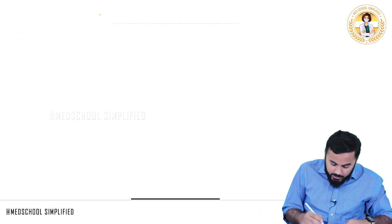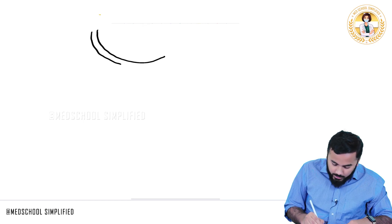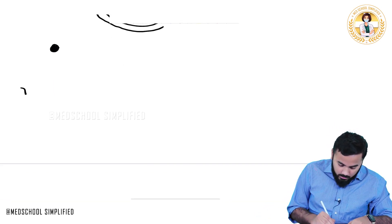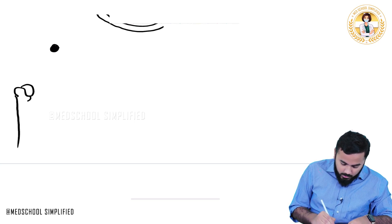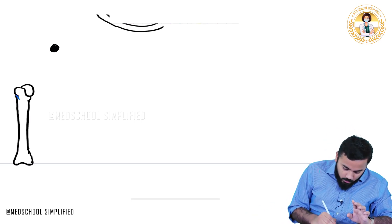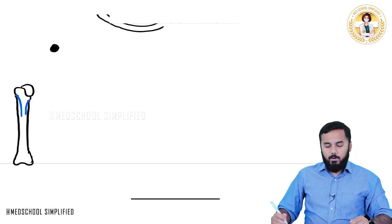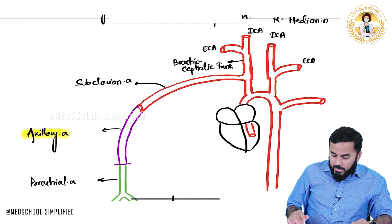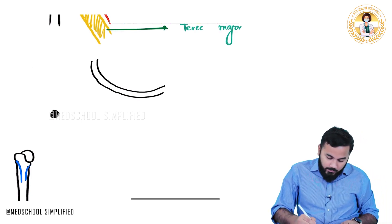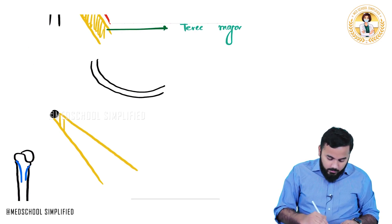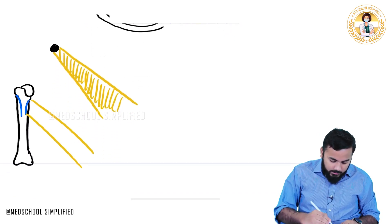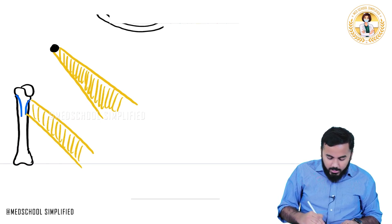I'm drawing the first rib over here, here we have the coracoid process, and here we have the humerus with its lateral lip and medial lip. The muscle here is your pectoralis minor, and coming out of the medial lip you have your teres major muscle. Now here we have our subclavian artery passing over the first rib, and we have pectoralis minor as well as teres major in position.